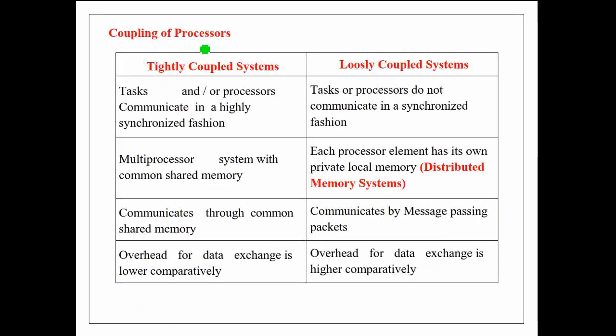Now let's discuss coupling of processors. We know that a multiprocessor system is a system that contains an interconnection or coupling of two or more processors. We can classify the multiprocessor system based on the interconnection made between the multiple processors in the system. Accordingly, a multiprocessor system can be classified into tightly coupled and loosely coupled systems.